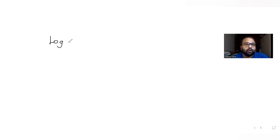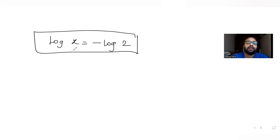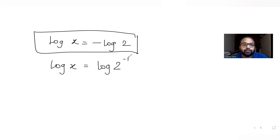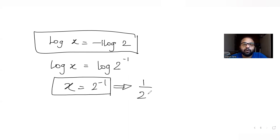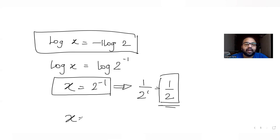After cancellation we get log x = −log 2. Since log a = log b implies a = b, we can write log x = log(2 raised to −1). Therefore x = 2^(−1) = 1/2. So the value of x0 is 1/2.